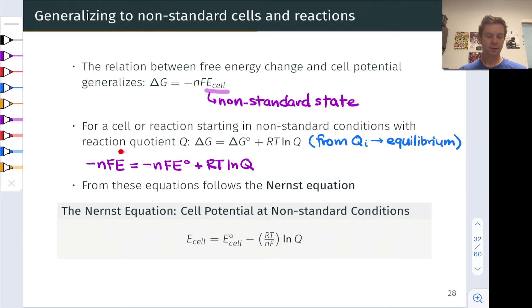From this equation right here follows a very important equation in electrochemistry, the Nernst equation, and this tells us the non-standard cell potential given the standard cell potential and a term that includes the reaction quotient Q for the galvanic cell as well as RT divided by N F. Dividing both sides by negative N F we arrive essentially at the Nernst equation.